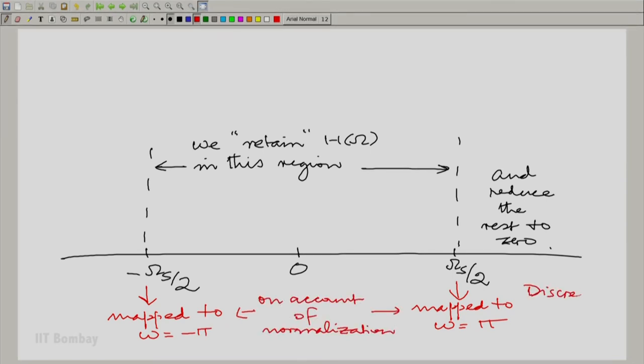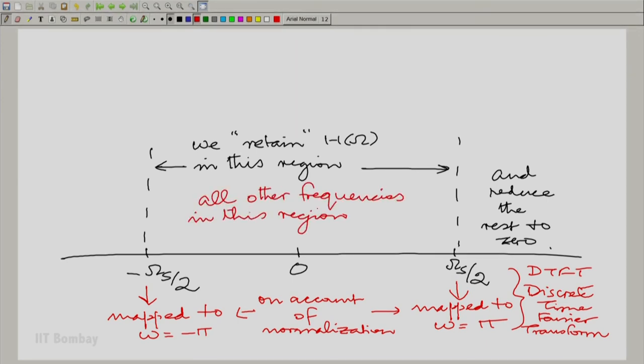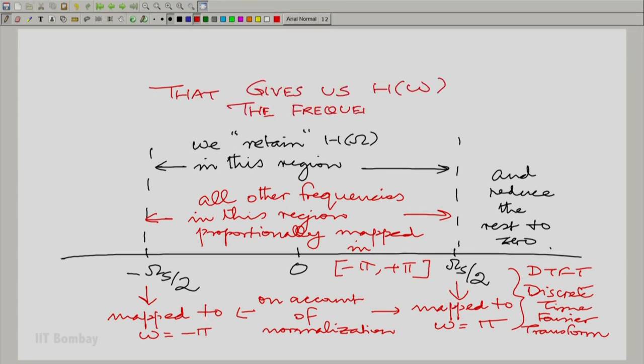Here we are talking about the discrete time Fourier transform or the DTFT as we have called it. And all other frequencies proportionately mapped. And that gives us capital H of small omega, the frequency response of the discrete time system.